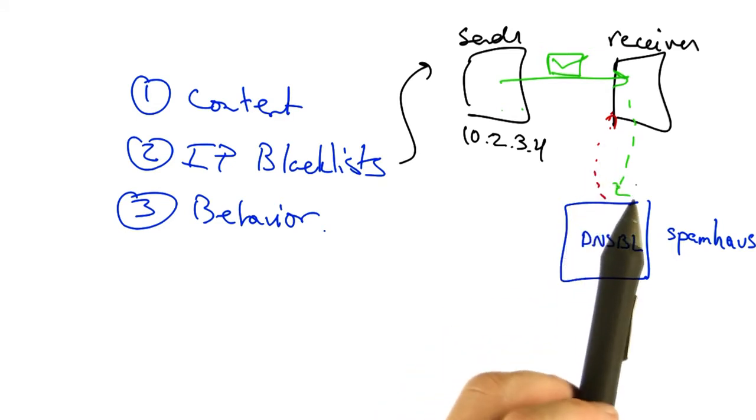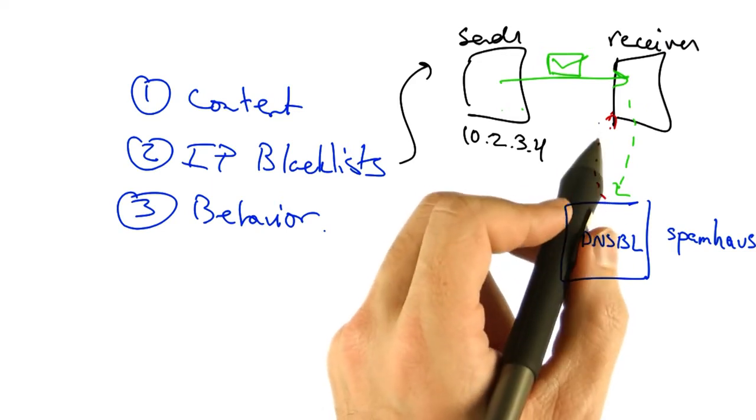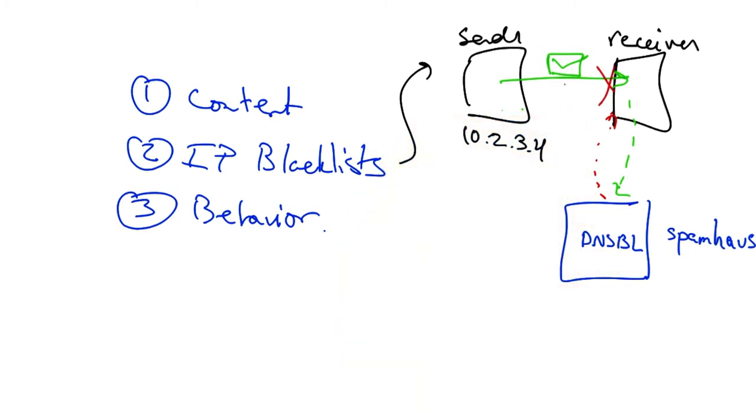Depending on whether or not that IP address appears in the blacklist, the receiver can then decide to accept the message. Or if the IP address turns out to be on the blacklist, the receiver can decide to terminate the connection and not even accept the mail in the first place, thereby saving the operator the trouble of even having to store the message.